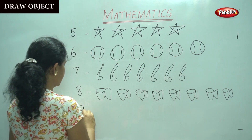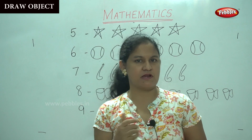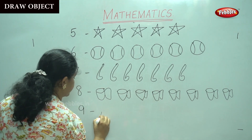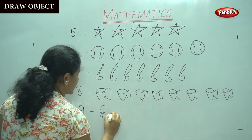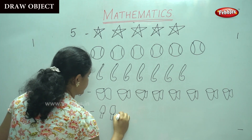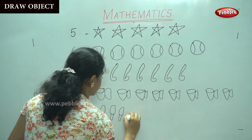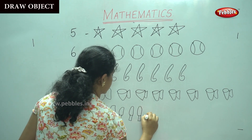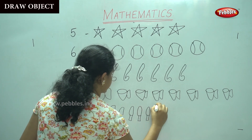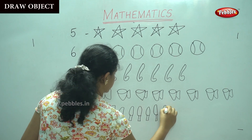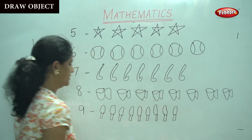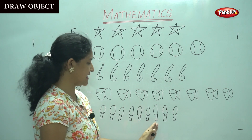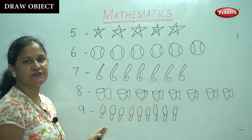The next number, number 9. What can we draw for number 9? Shall we draw the cricket bat? 1, 2, 3, 4, 5, 6, 7, 8, 9. We have 9 objects for the number 9.